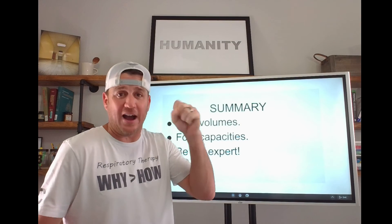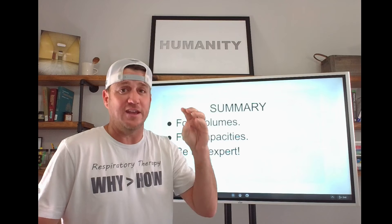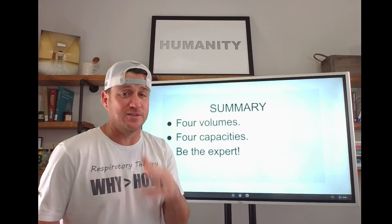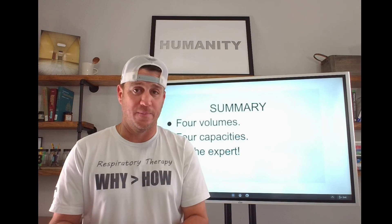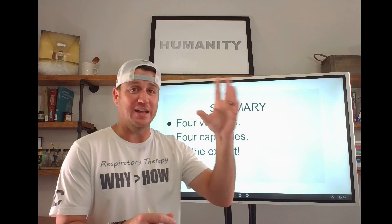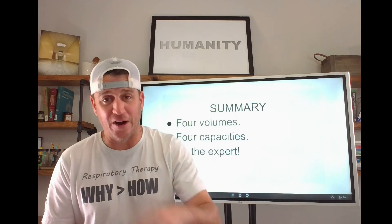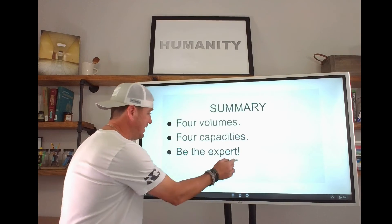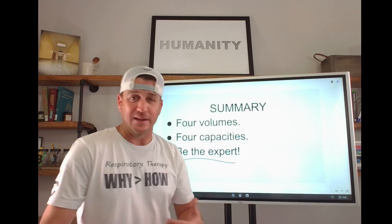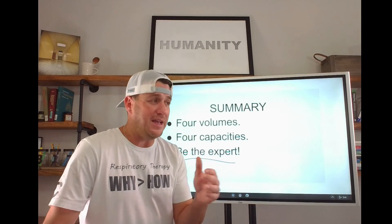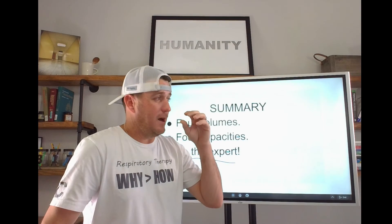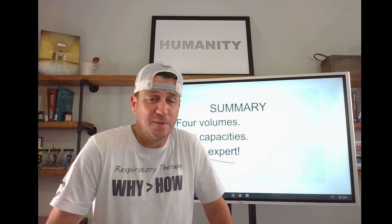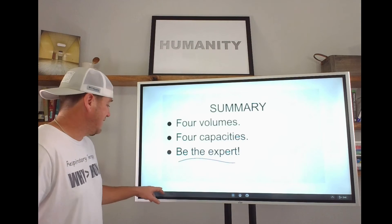Here's the summary. There are four volumes: IRV, tidal volume, ERV, and residual volume (RV). There are also four capacities — capacities are made up of two or more lung volumes. We have inspiratory capacity, functional residual capacity, vital capacity, and total lung capacity. Keep these things in mind and review them occasionally, because this is what makes you a unique part of the healthcare team — the cardiopulmonary expert that most people don't understand.